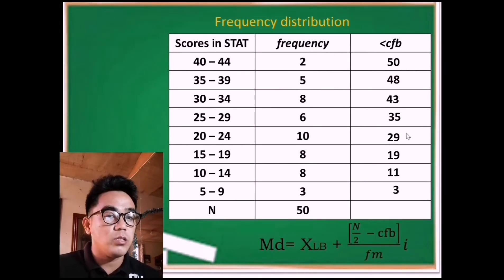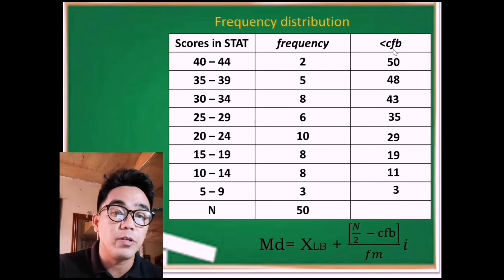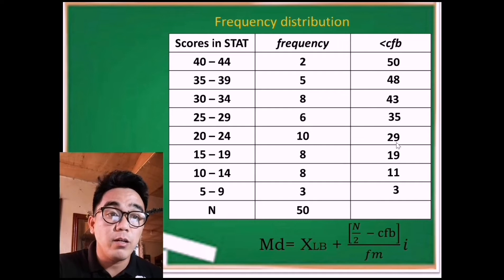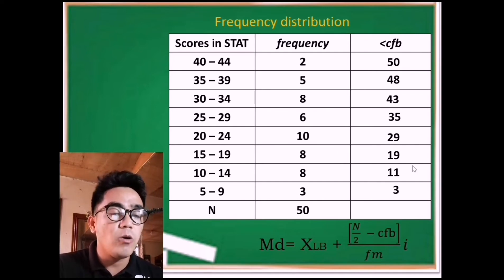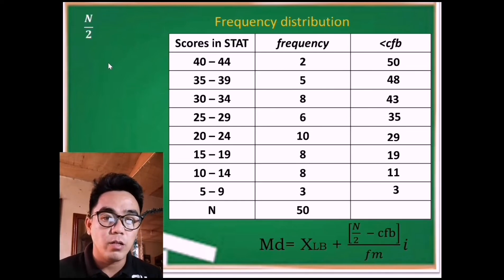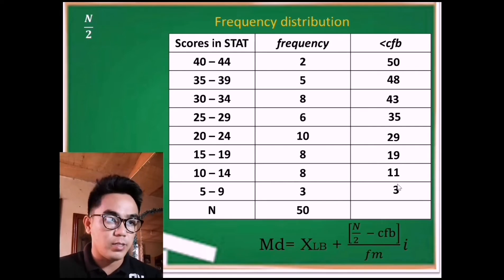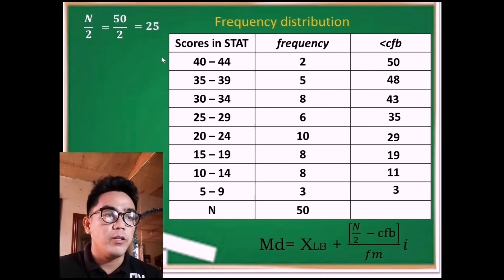The main importance of computing the cumulative frequency before the median class is that these values are the basis for identifying the median class itself. To determine the median class, we first consider n over 2. Since n is 50, half of it is 25. We use this value to determine which row is the median class.